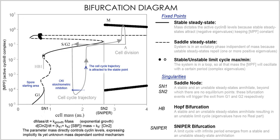To fit the parameters, the differential equations must be studied, either by simulation or by analysis. In a simulation, given a starting vector of the values of the variables, the progression of the system is calculated by solving the equations at each time frame in small increments. In analysis, the properties of the equations are used to investigate the behavior of the system depending on the values of the parameters and variables. A system of differential equations can be represented as a vector field, where each vector describes the change determining where and how fast the trajectory is heading. Vector fields can have several special points: a stable point called a sink that attracts in all directions, an unstable point either a source or a saddle point which repels, and a limit cycle — a closed trajectory towards which several trajectories spiral, making the concentrations oscillate.